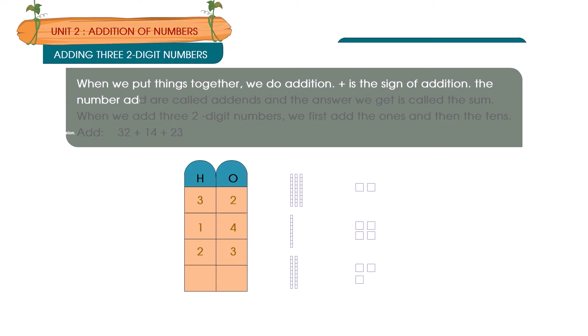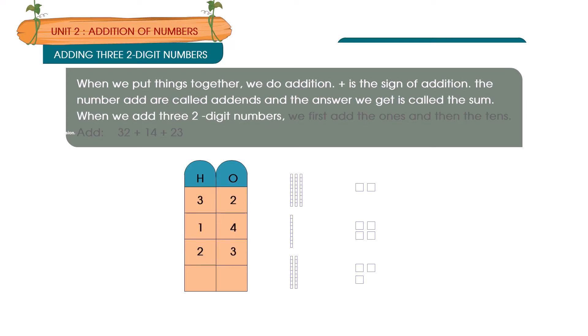The numbers we add are called addends and the number we get is called the sum. When we add three two-digit numbers,